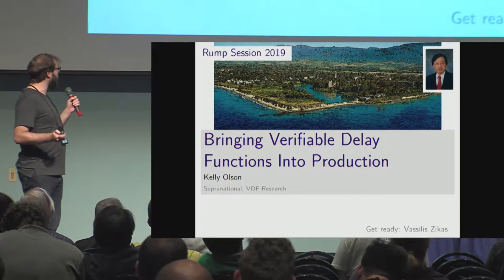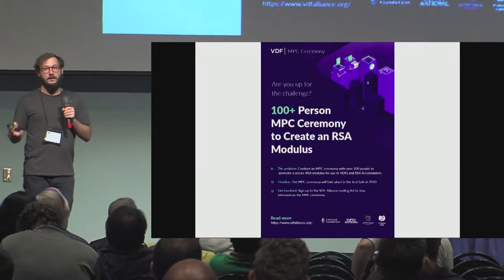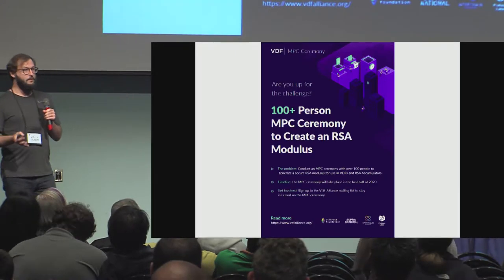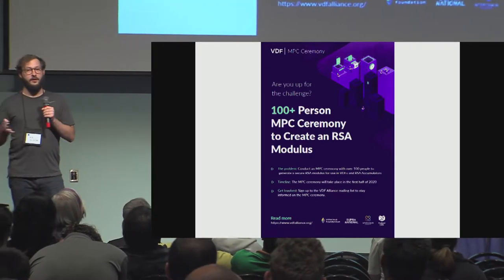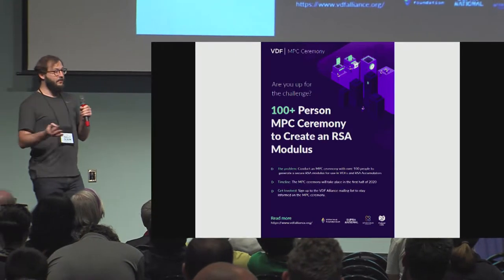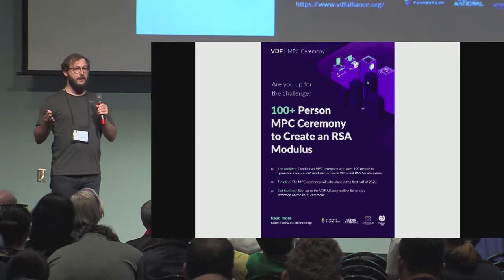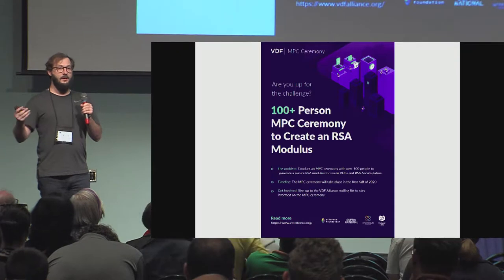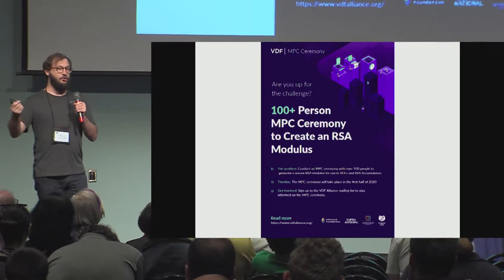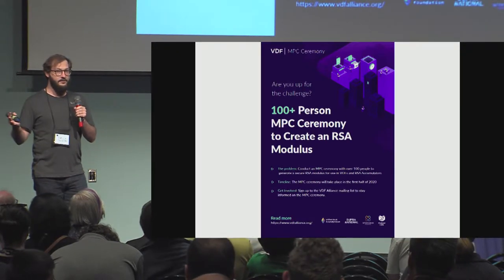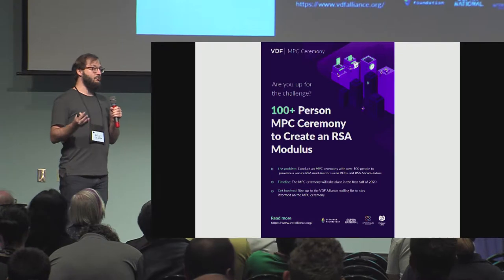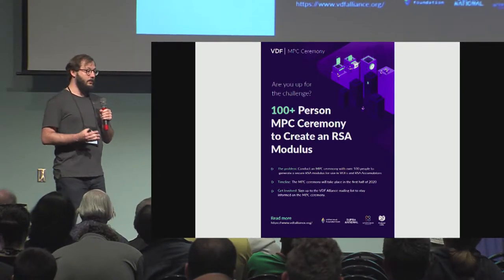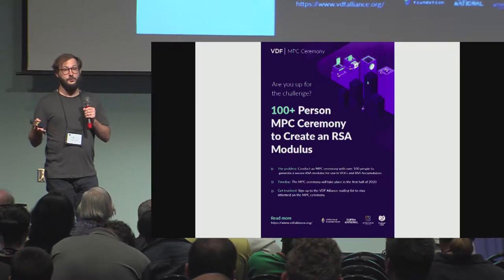For those that don't know, last year there was a talk given by Dan Bonet on a paper by Benedict Boons and Ben Fish, who are here, about verifiable delay functions. Verifiable delay functions is basically a function that requires a number of sequential steps, and once completed, you can provide a very short proof that you've completed those steps. But in order to make these things actually useful for production, you need to ensure that the verifiable delay function is both efficient, fast, and also secure.